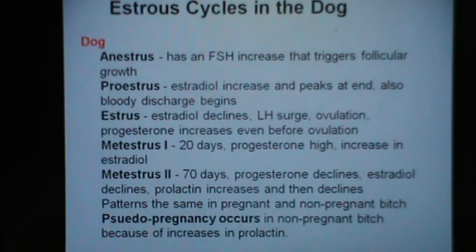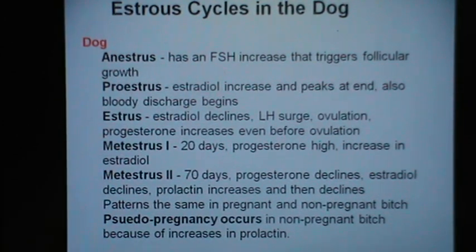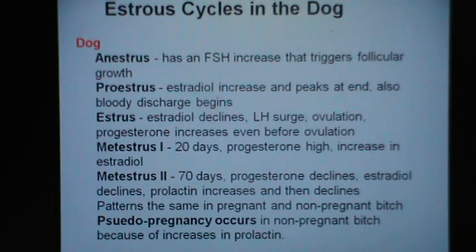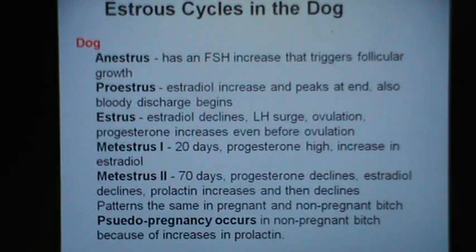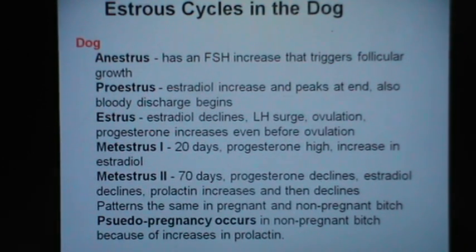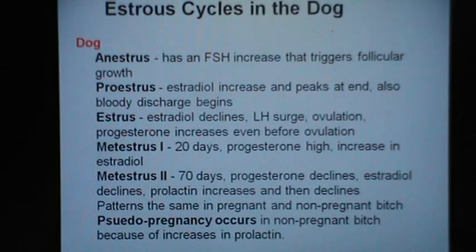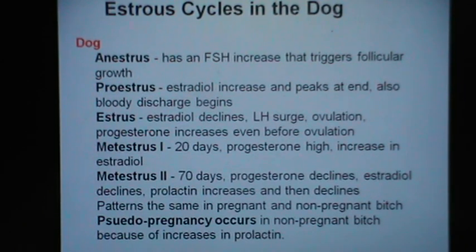The estrus cycle in the dog: proestrus is characterized by vaginal bleeding; estradiol increases at this time, peaking at the end, resulting in plenty of vaginal bleeding. Then during estrus the estradiol declines and there is an LH surge resulting in ovulation; progesterone increases even before ovulation. Then there is a metestrus — metestrus 1 lasts 20 days and the progesterone is high. A second metestrus is considered to be of 70 days in bitches which have not become pregnant, nearly equal to the pregnancy period.